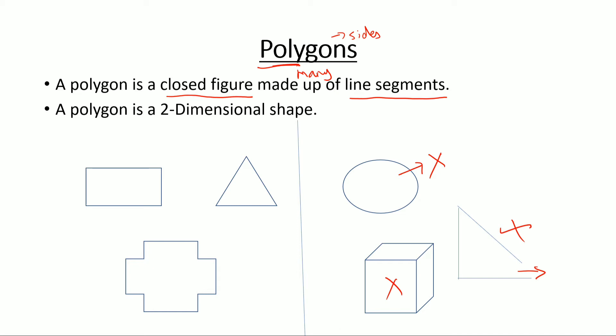So the polygons that we have learned are like rectangles, triangles, and this figure is also a polygon because it satisfies all the conditions. It is a closed figure, it is made up of line segments, and it's a 2D shape.